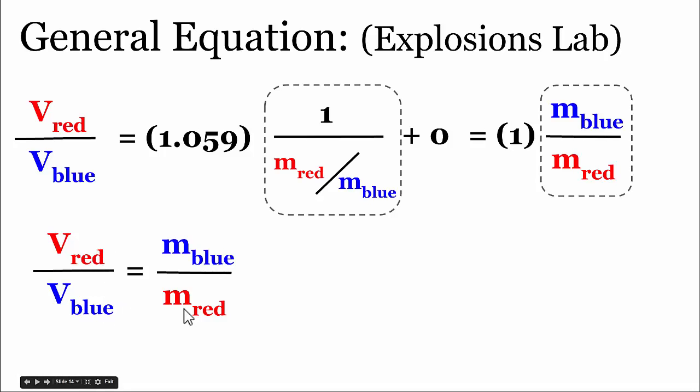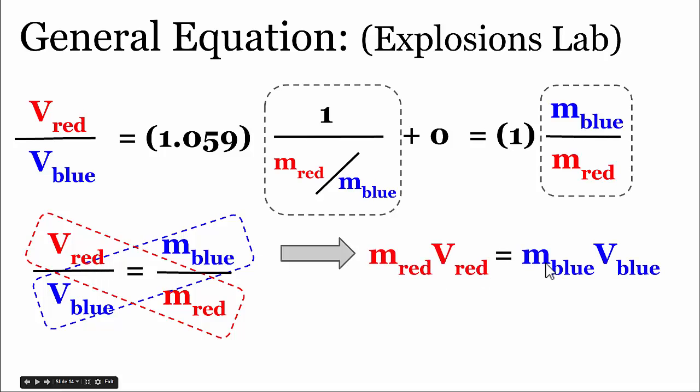I'm going to take this one step further. If we cross-multiply this equation, where we take the red mass times the red velocity, that will be equal to the blue mass times the blue velocity.